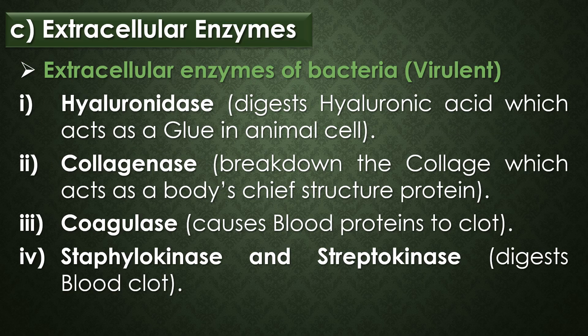The third virulence factor is extracellular enzymes. Many pathogens secrete enzymes that enable them to dissolve structural chemicals in the body, thereby maintaining an infection, invading further, and avoiding body defenses. Extracellular enzymes of bacteria are highly virulent in nature. Some examples of bacterial extracellular enzymes are: hyaluronidase, which digests hyaluronic acid that acts as a glue in animal cells; collagenase, which breaks down collagen, the body's chief structural protein; coagulase, which causes blood proteins to clot; and staphylokinase and streptokinase, which digest blood clots.